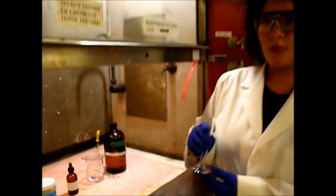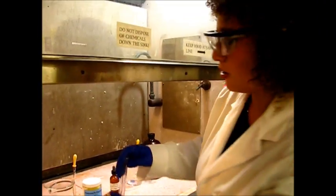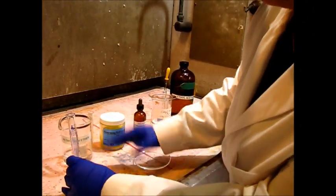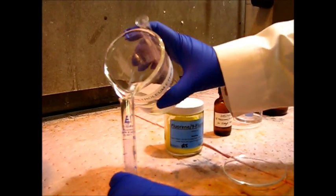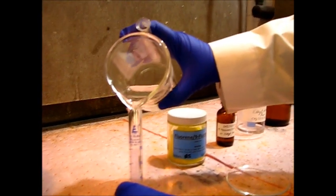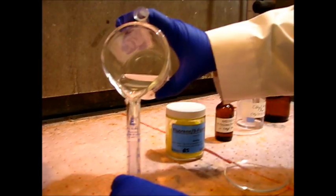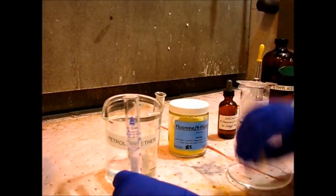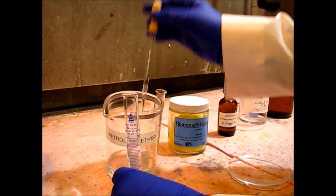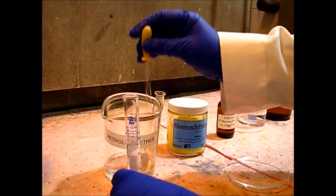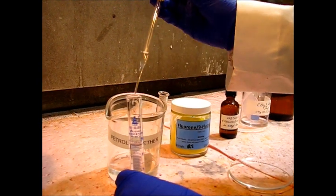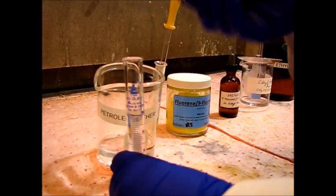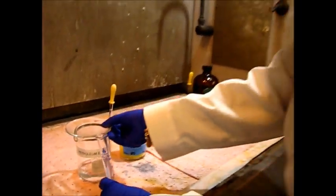We're going to start by pouring 10 mLs of petroleum ether into our 10 mL graduated cylinder. You can start by pouring up until the 9 line or approximately, and then you can use the pipette to accurately measure 10 mLs. Make sure you put the watch glass on top so it doesn't evaporate.